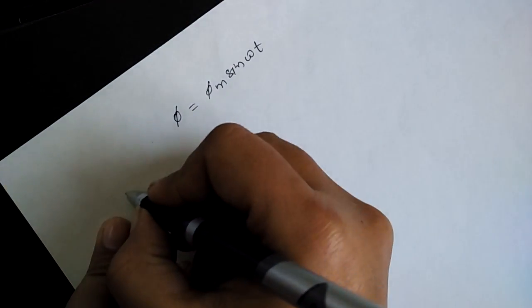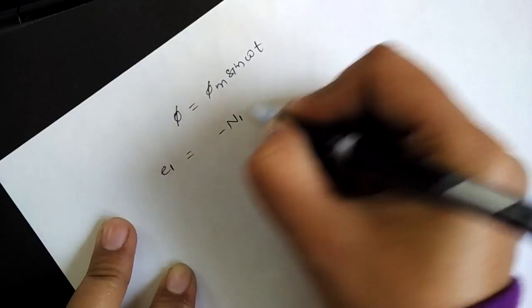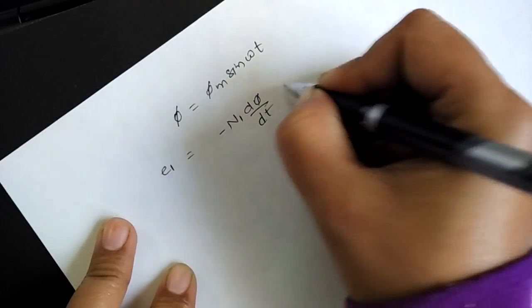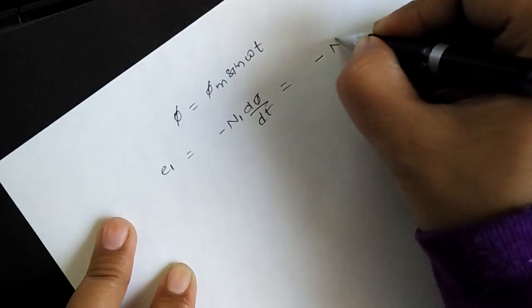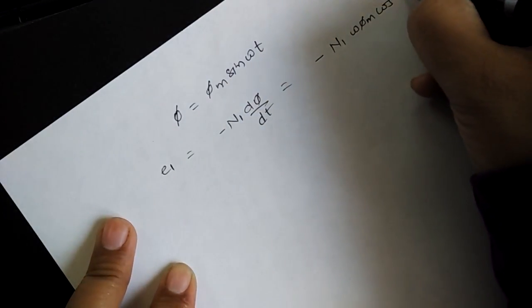The induced EMF can be written according to Lenz's law: EMF should be minus n1 into d phi by dt, or you can write it as minus n1 omega phi_m into cos omega t.